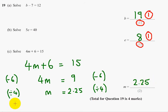And that's it for question part C. And that's worth 2 marks. So the first mark is for taking away 6. And the second mark is for an answer of 2.25 or even 9 over 4.